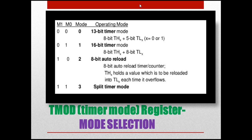In mode 0, the timer operates as a 13-bit timer — you assign the lower 5 bits only. In mode 1, it is a full 16-bit timer. In mode 2, it is an 8-bit auto-reload timer: when the count overflows, it automatically reloads the initial value. Mode 3 is a split timer mode.